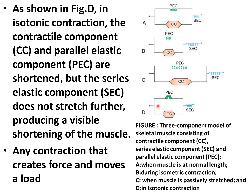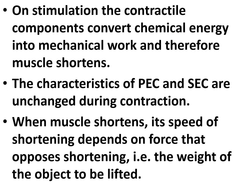As shown in figure D, in isotonic contraction the contractile component and parallel elastic component are shorter, but the series elastic component does not stretch further, producing a visible shortening of the muscle. On stimulation, the contractile components convert chemical energy into mechanical work, and therefore the muscle shortens. The characteristics of the parallel and series elastic components are unchanged during the contraction. The speed of shortening depends on the force that opposes shortening — the weight of the object to be lifted.